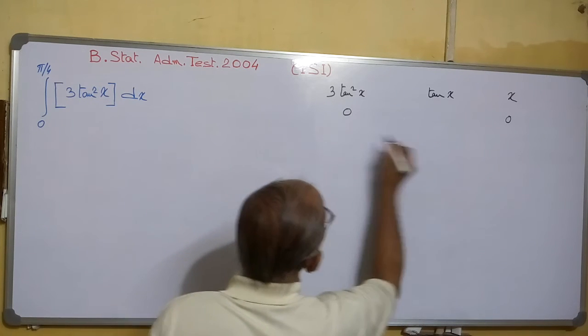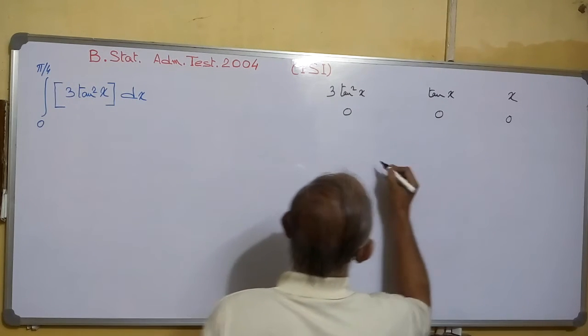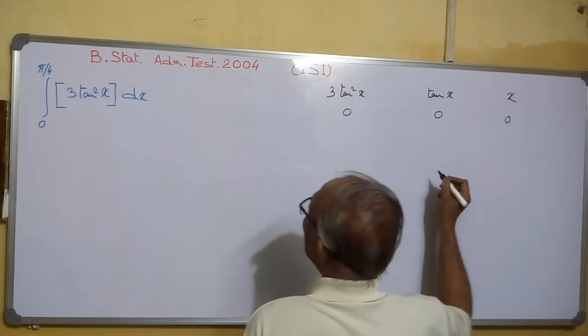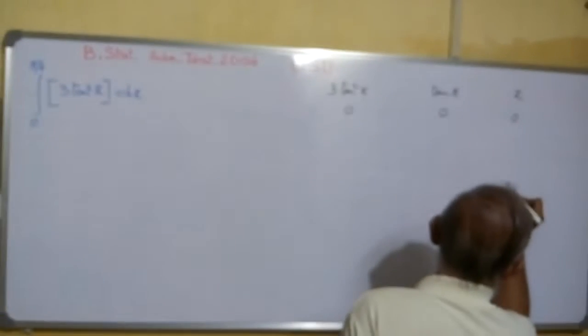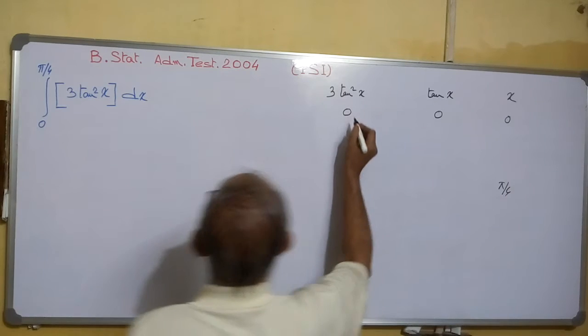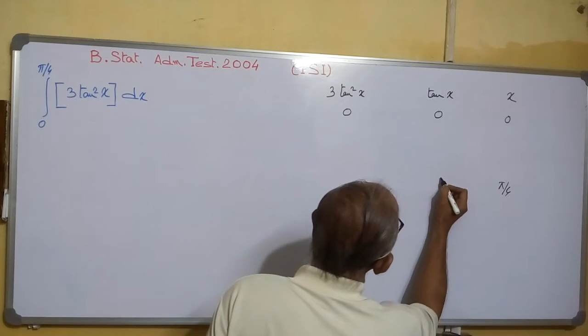When x is 0, then 3tan²x is also 0, tan x is also 0. When x is π/4, then 3tan²x is 1, so 3tan²x is 3.